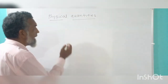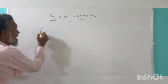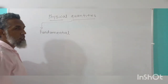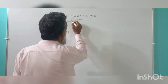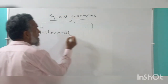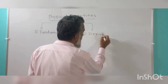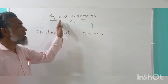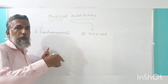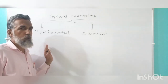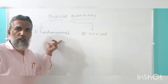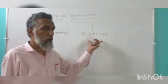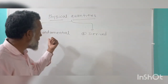Physical quantities can be divided into two types. The first one is fundamental quantities, and the second one is derived quantities. Fundamental quantities are those physical quantities which are independent of other quantities. Derived quantities are those quantities which depend on the fundamental quantities.